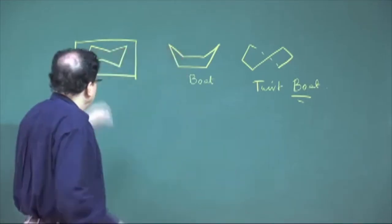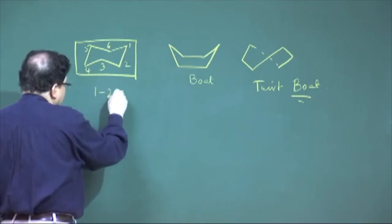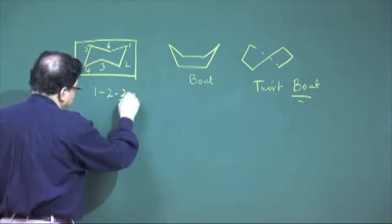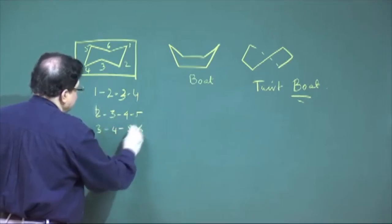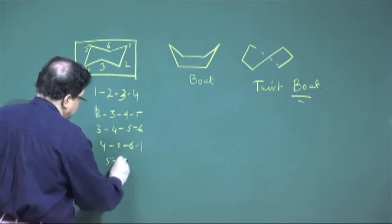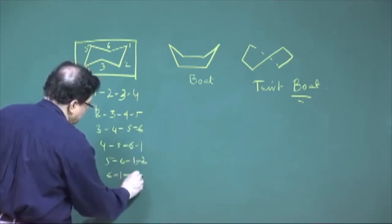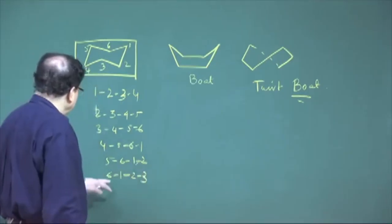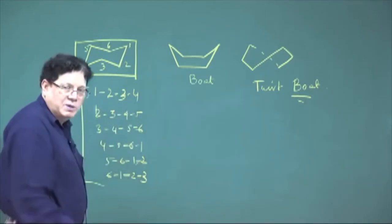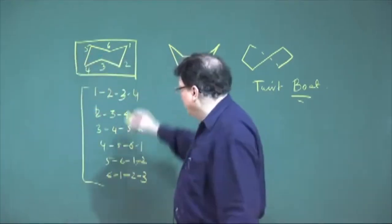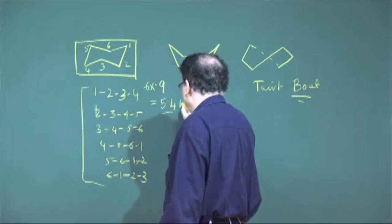Based on that, we regarded cyclohexane as consisting of 6 butane units: 1-2-3-4, 2-3-4-5, 3-4-5-6, 4-5-6-1, 5-6-1-2, and 6-1-2-3. All 6 of these butane units are in the gauche form, giving a total energy of 5.4 kcal/mol.